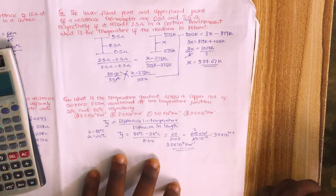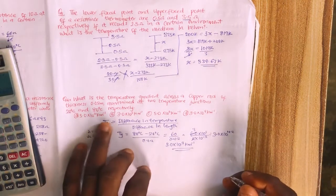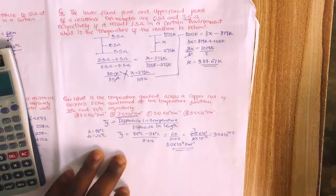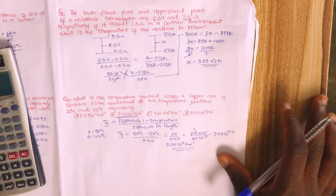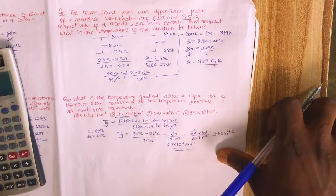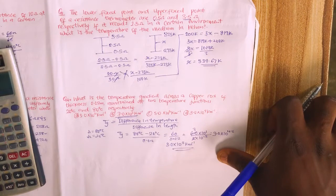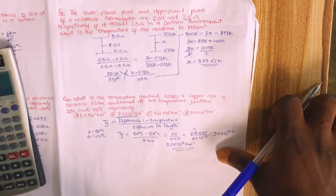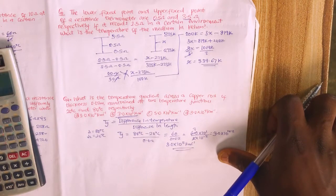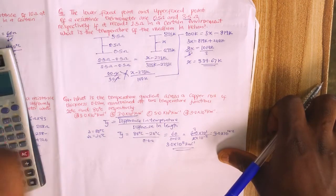So the answer is 3.0 × 10³ K/m, which corresponds to option B. If you haven't subscribed to my YouTube channel, click the description button and make sure to watch the previous videos on conversion of temperature scales. Thanks for watching.